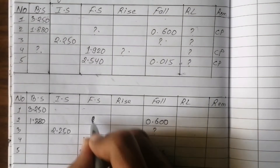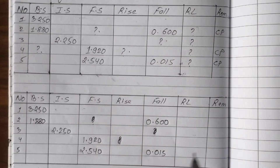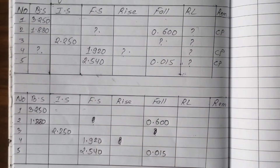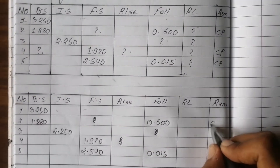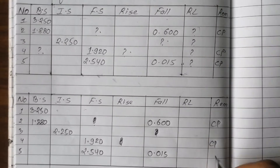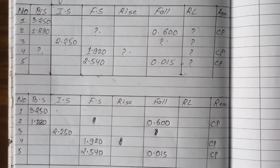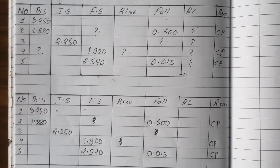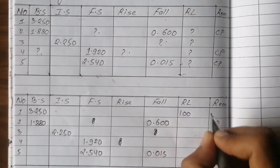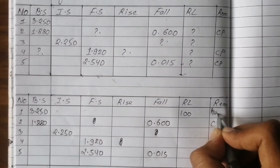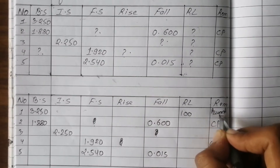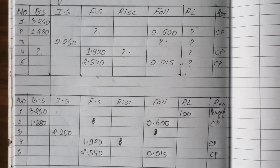I am going to read and find the missing data — this is how we calculate. We need to define the change points. Now let me write the RL column. We can write and work through an example. The assumed RL is 100.